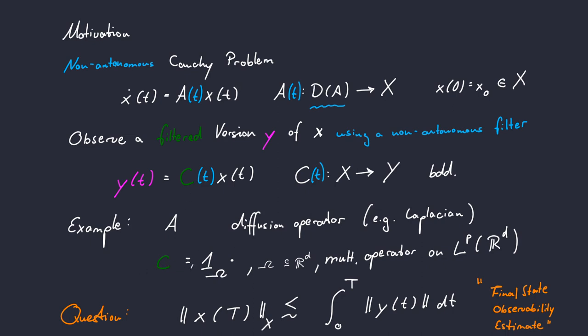And of course, this also translates in our example. So A of t is now a family of diffusion operators with diffusion coefficients that depend on time. And our observation operator C now depends on time. In our case, the multiplication now takes place with a family of sets that we restrict our observation to.